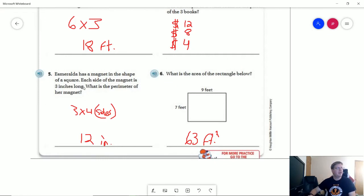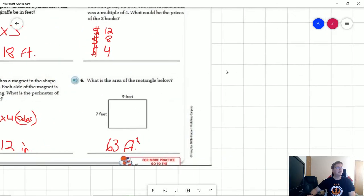For number 5, Esmeralda has a magnet in the shape of a square. So I'm going to multiply my side length times 4 sides. That gives me 12 inches. And again, because we're working with perimeter, we're not going to have the square for that. And then for number 6, we would do 9 feet times 7 feet to get 63 square feet.